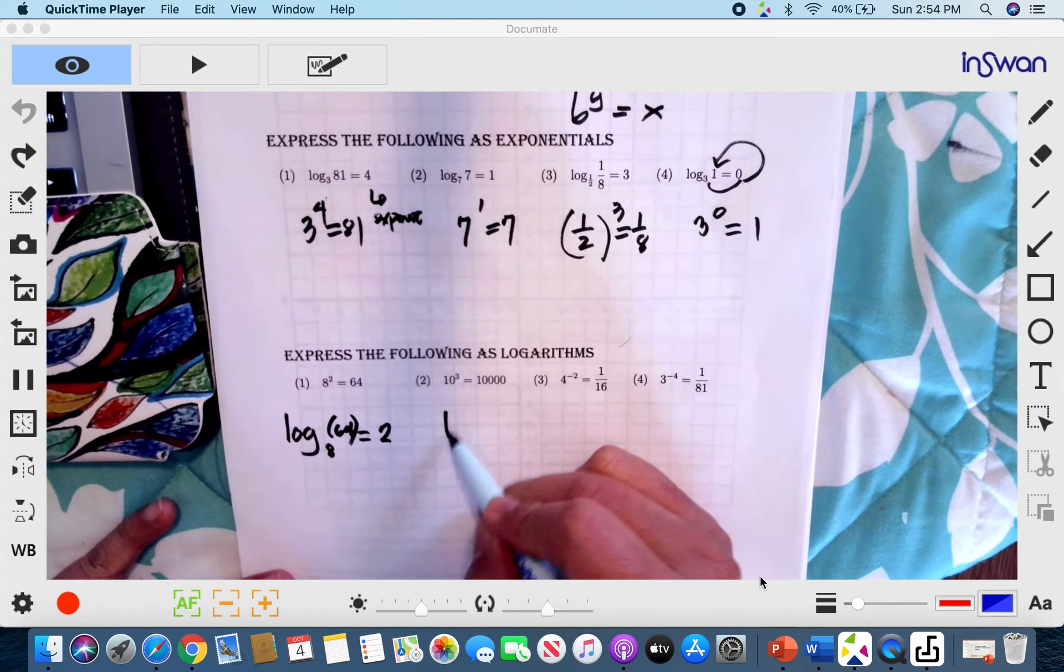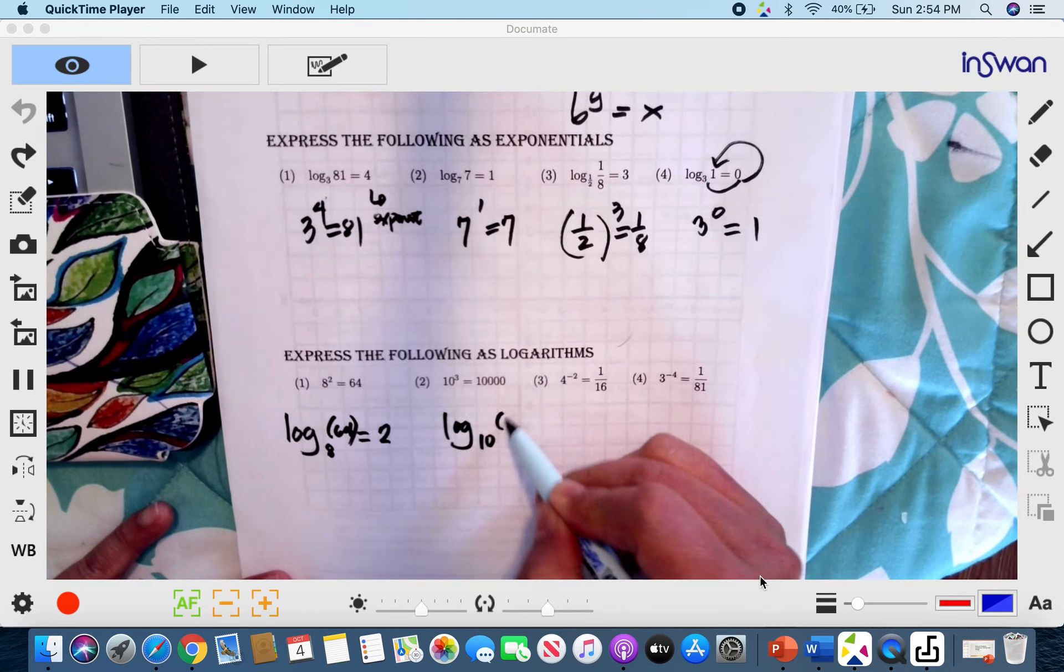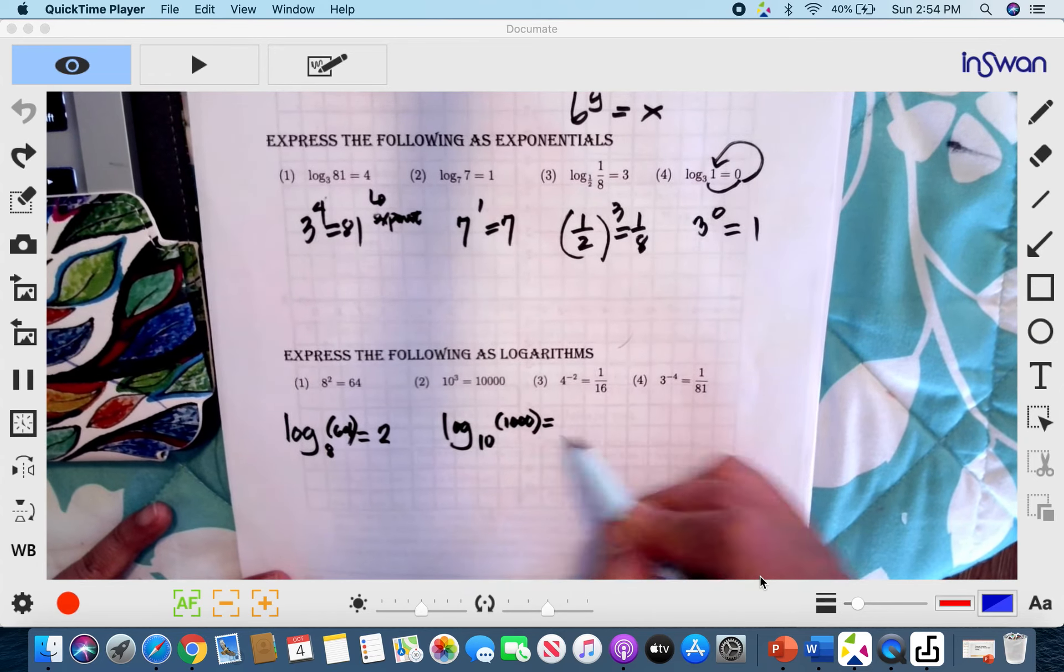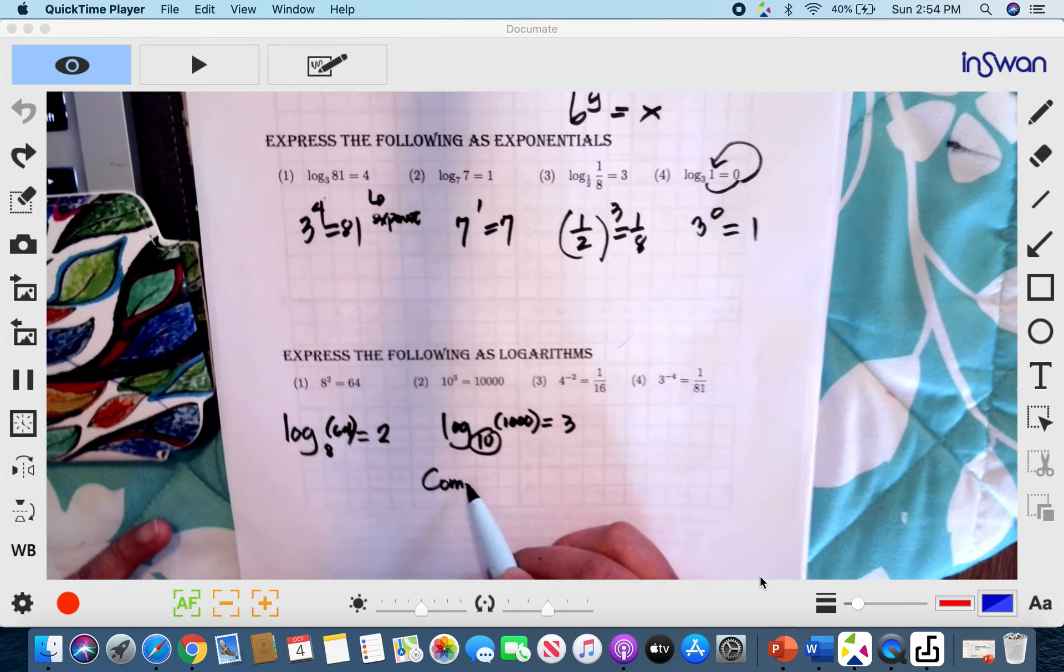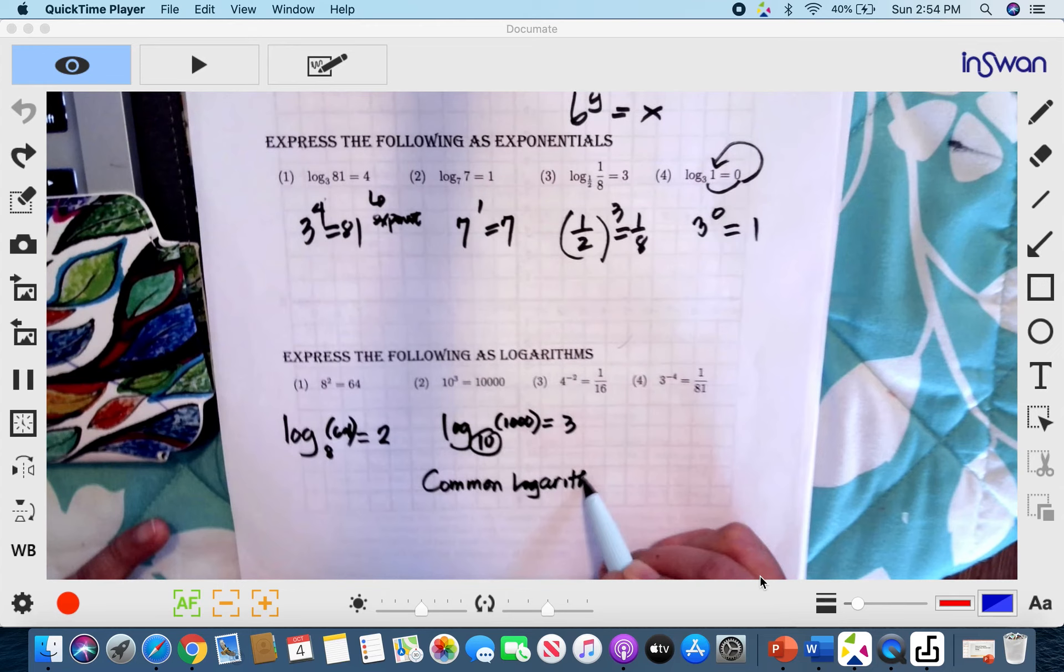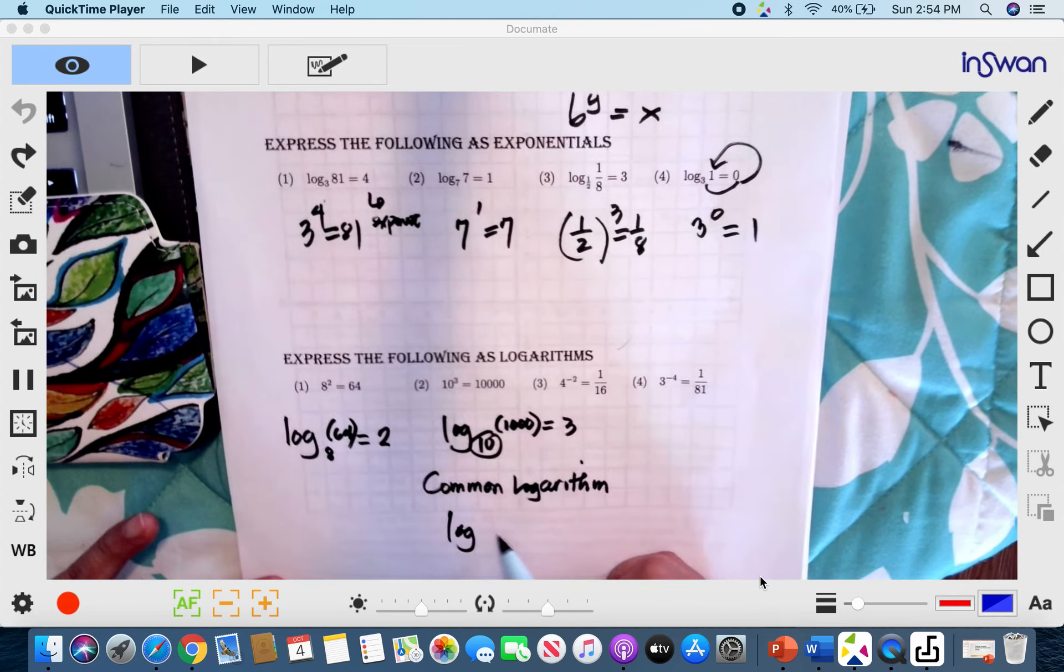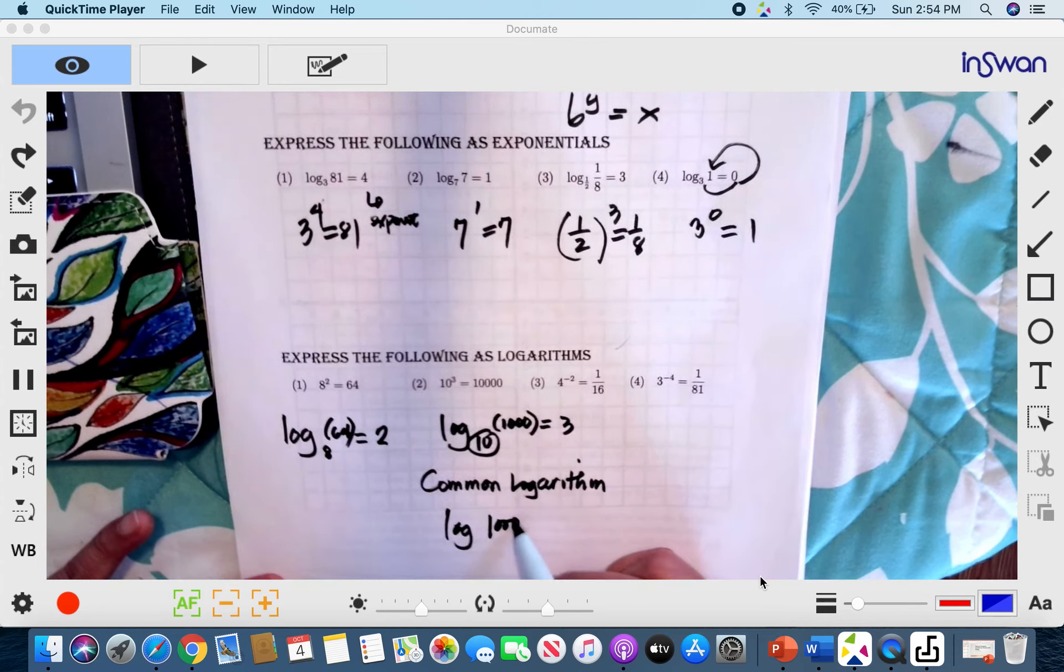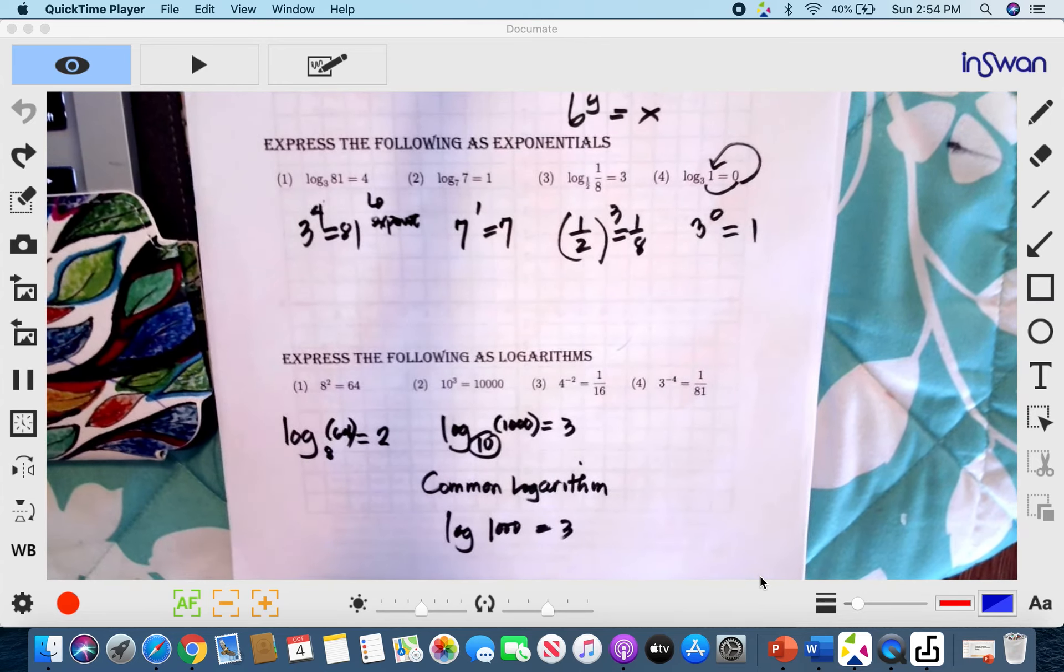So making this as logarithm of 1000 base 10 is equal to 3. Now in logarithm, if your base is 10, we call it common logarithm, you actually don't need to write it. It's understood to be common logarithm when the base is not written. So you have logarithm of 1000 equals 3. That means your base is 10. And you actually don't need to write it.